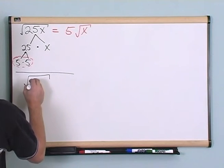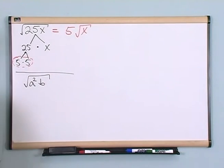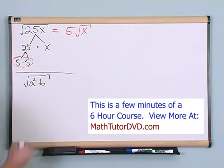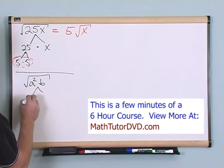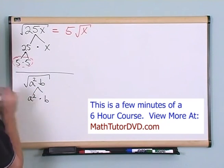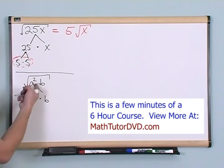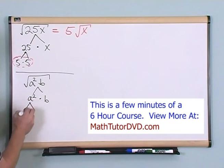What if you had something a little bit more complicated, like the square root of a squared b? Okay. Well, this is just simply equal to a squared times b, right? That's the definition. And then a squared is just simply a times a.